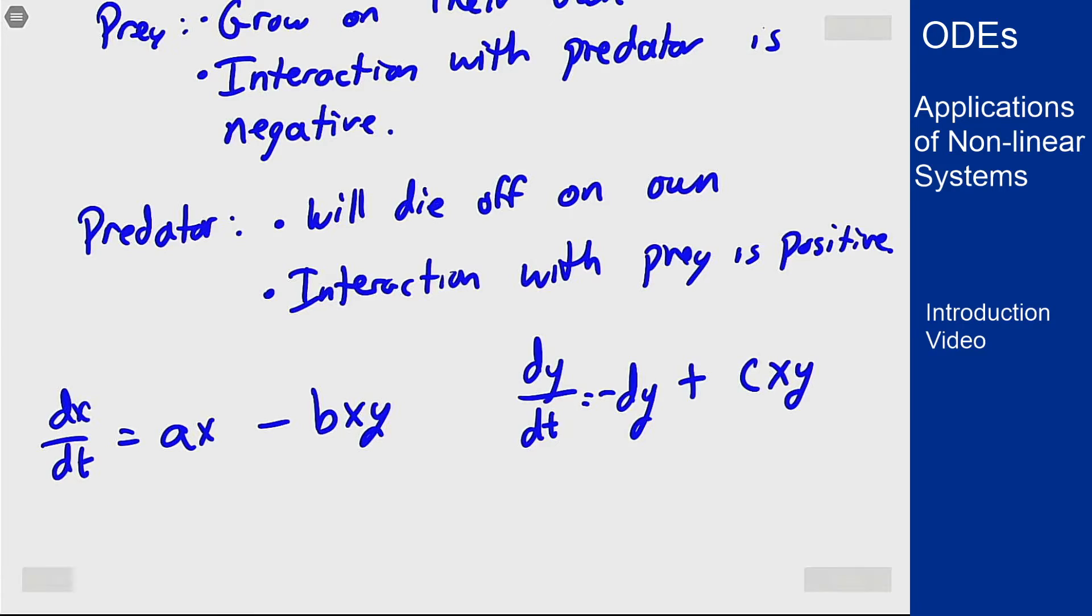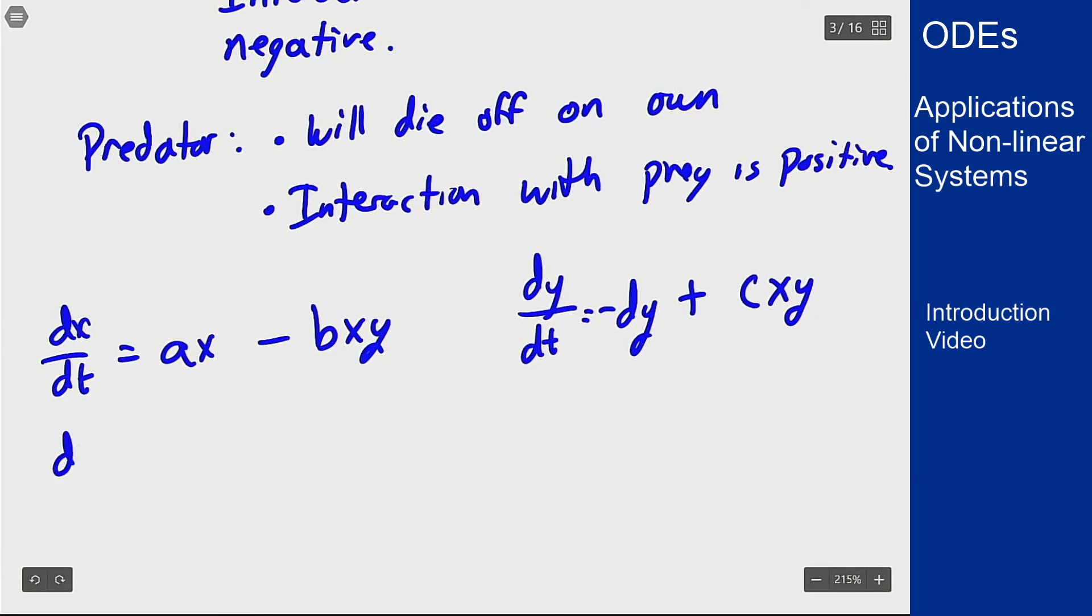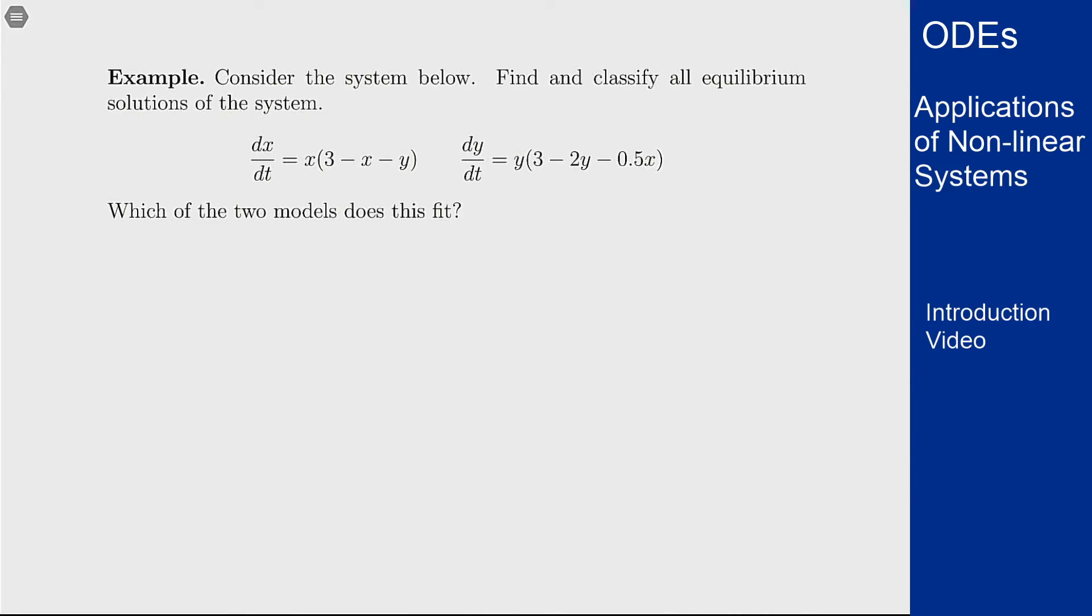You also use logistic growth for the prey population, something like dx/dt is ax(k minus x) minus bxy. The overall structure is the same where you have the negative interaction term on the prey side but the positive one on the predator. That's the main difference between these setups: one is negative-negative, this one is negative for the prey and positive for the predator. So let's see how this all works together.